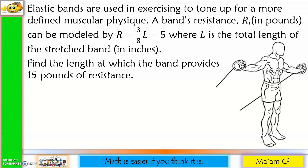Elastic bands are used in exercising to tone up for a more defined muscular physique. A band's resistance, denoted R and measured in pounds, can be modeled by R equals 3/8 times (L minus 5), where L is the total length of the stretched band in inches. Find the length at which the band provides 15 pounds of resistance. We are given the formula for R, but we are asked to determine L if R is 15 pounds, so we have to solve for L.